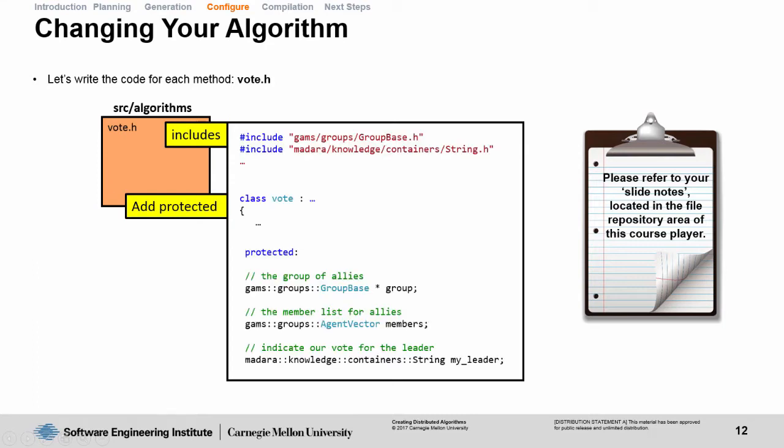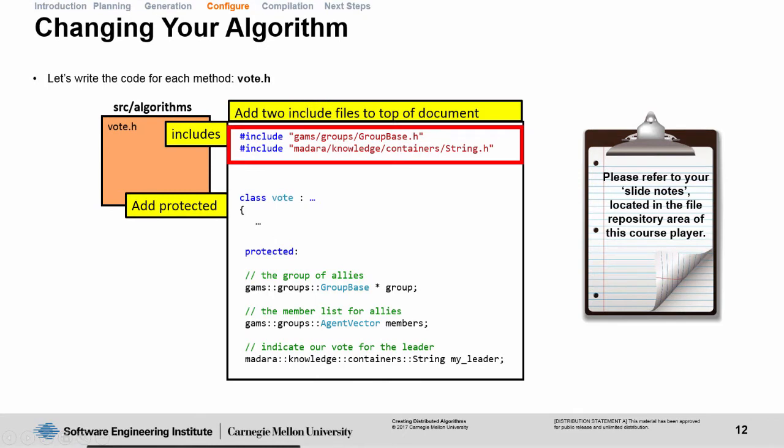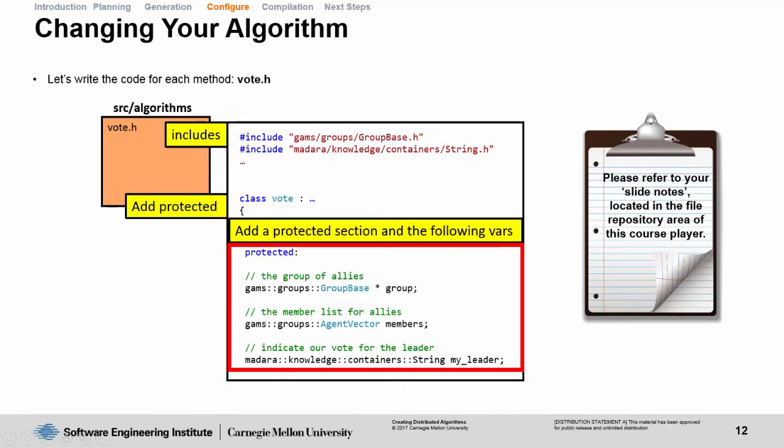By the way, if you get lost at any part of this module, please refer to your slide notes. They include all the text you see here, including the full implementation of vote.h and vote.cpp. I'm going to go over a high-level understanding of what is inside of these files. First, we specify two header includes: group base and string, at the top of the document. Group base, we need to be able to reference the allies group to look at its members and to be able to see what our ranking in the group is. The second include is the string container class in MADARA. This is a container class that allows us to have a reference inside the knowledge base to a string value. You can see at the bottom of the class that we have this container, myLeader, which is going to be who we're going to vote for so other people know exactly who we think the leader is.